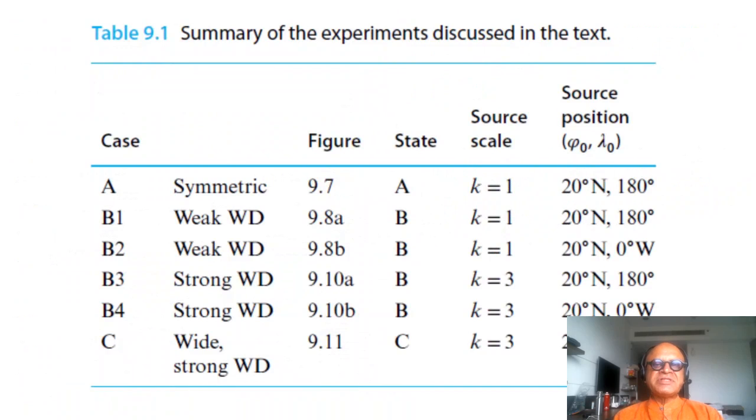The experiments done included these various perturbations: symmetric case, weak westerly duct, strong westerly duct, and the forcing being made wider and stronger in the stronger westerly duct. These are the various figures and the source of the perturbation in the extra tropics.